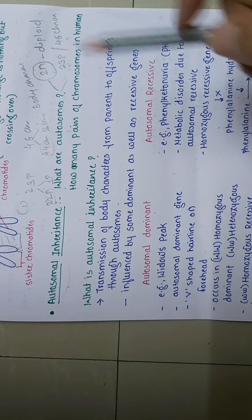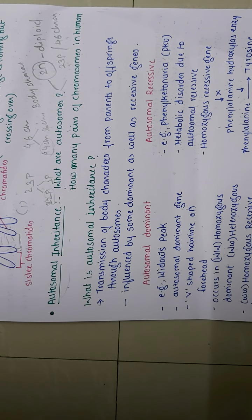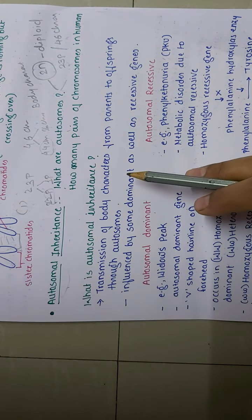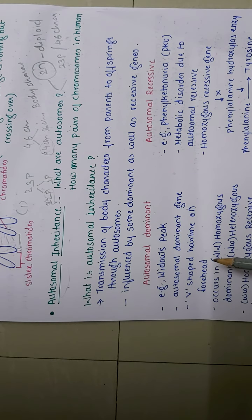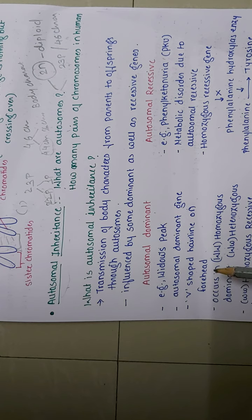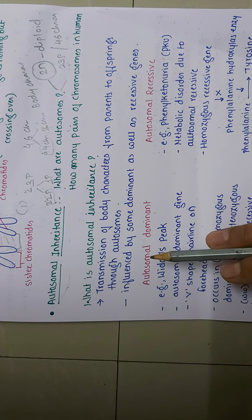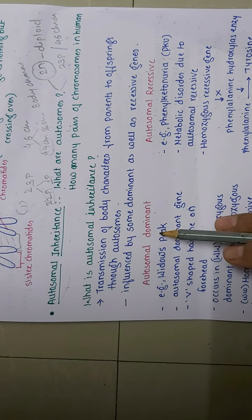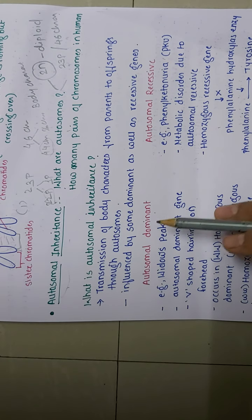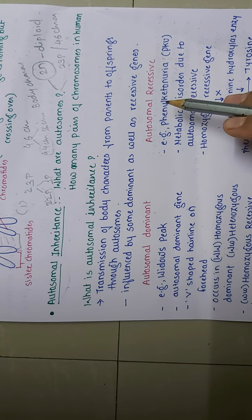So what is autosomal inheritance? The transmission of body characters from the parent to the offspring through autosomes is nothing but autosomal inheritance. It is influenced by some dominant as well as recessive genes. That is why it has two types: autosomal dominant and autosomal recessive. If the autosomes are dominant for a particular trait it is known as autosomal dominant; if recessive, it is autosomal recessive.